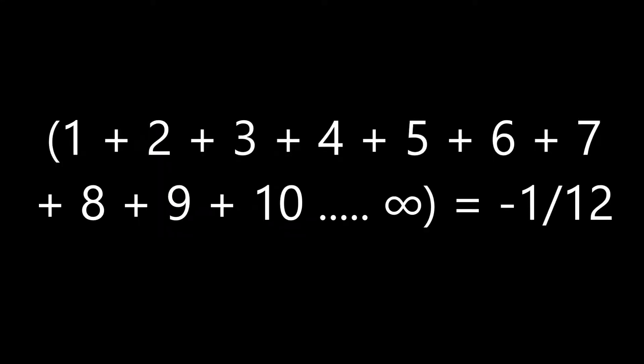1 plus 2 plus 3 plus 4 plus 5 plus 6, up to 10, up to infinity, is equal to negative 1 over 12. What? That's impossible. That must be wrong. How on earth can that happen? Adding all the positive numbers will surely yield a number greater than a fraction, let alone a negative number.